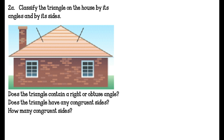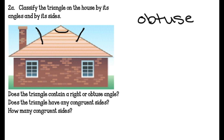2A: Classify the triangle on the house by its angles and by its sides. The first thing I'm going to do is look at its angles — does it have a right angle, an obtuse angle, or are they all acute? I believe this looks like it has an obtuse angle, so I'm going to say it's an obtuse triangle. Looking at the sides, these markings — I'll do them in red so they stand out — mean that those sides are congruent. There are two congruent sides, which means it is isosceles. So it is an obtuse isosceles.